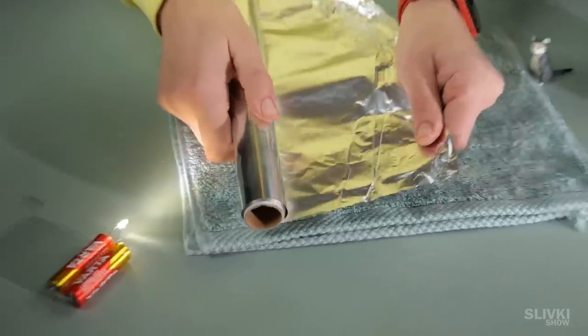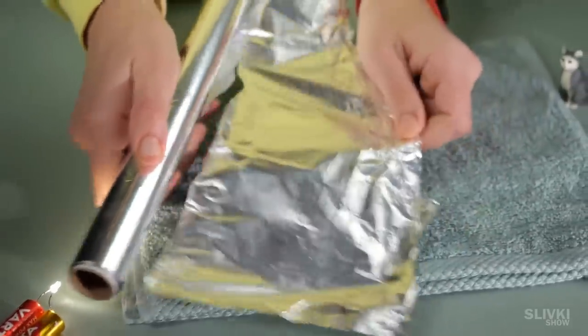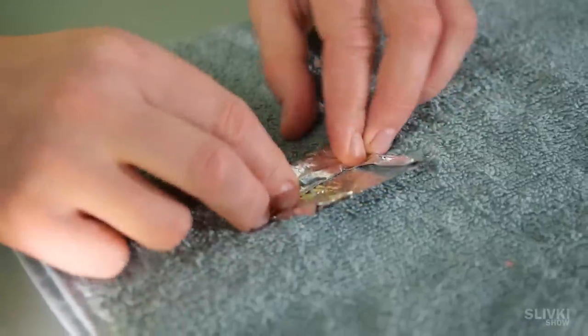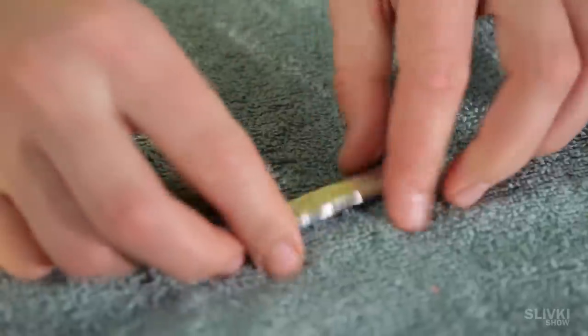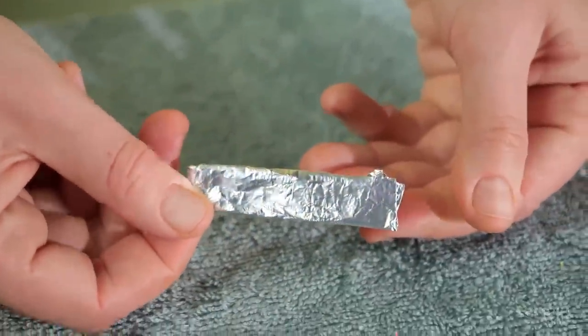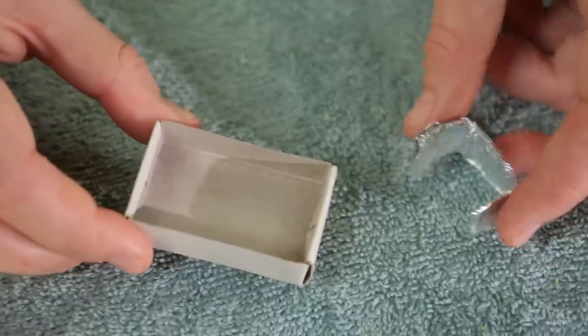But if you don't want to solder the wire at the battery you may replace it with another option in just under a minute. Take a piece of foil, roll it up into a narrow strip, open a matchbox and put it inside as shown in the video.